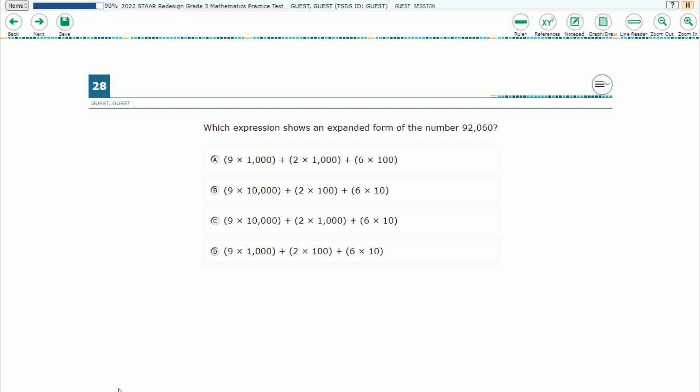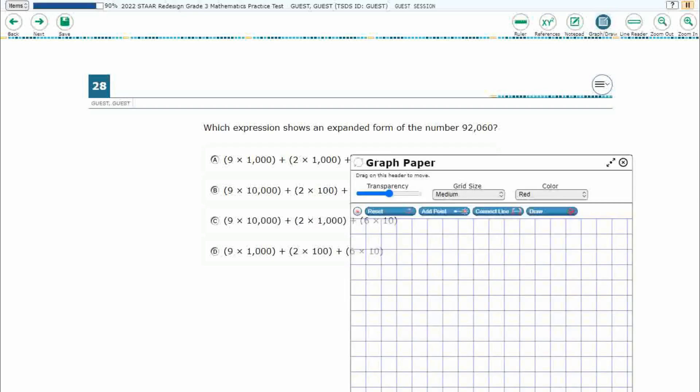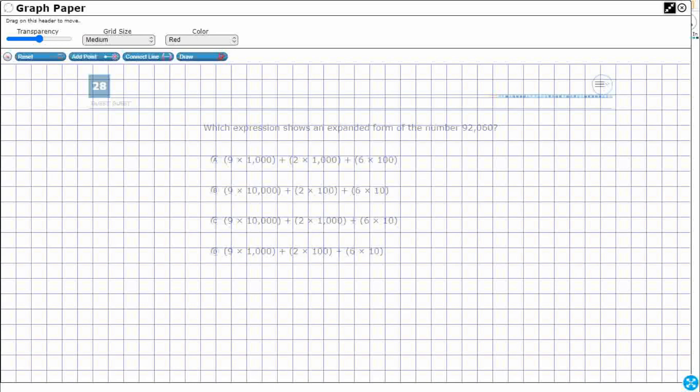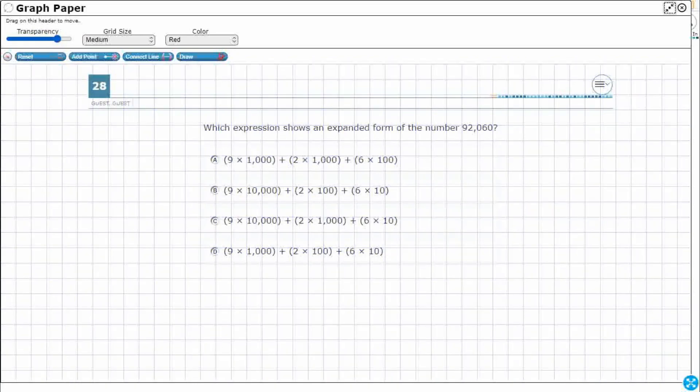Alright, so we have an expression here and we need to show an expanded form of this number, 92,060. So I'm going to use my graph draw feature. I'm going to open it up here, increase my transparency so I could still see the problem behind it but I can draw all over it.